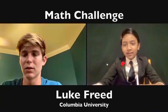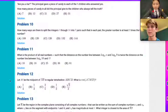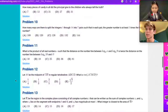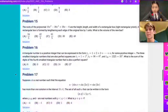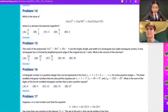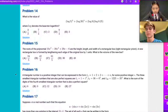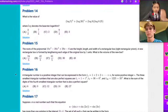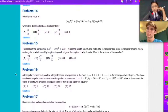Which problem should we do first? Let's see if we can get a bit harder — let's try 15. The roots of the polynomial 10x³ minus 39x² plus 29x minus 6 are the height, length, and width of a rectangular box. A new rectangular box is formed by lengthening each edge of the original box by two units. What is the volume of the new box?